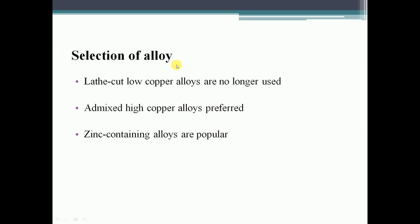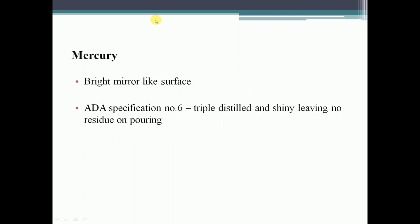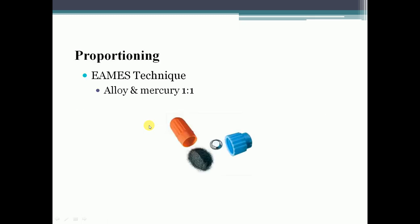Selection of alloy: lathe cut low copper alloys are no longer used; admixed high copper alloys are preferable nowadays; zinc-containing alloys are very popular. Regarding mercury: bright mirror-like surface. According to ADA specification number 6 — triple distilled and shiny, leaving no residue on pouring. Mercury-to-alloy ratio is 1:1 in the image technique.